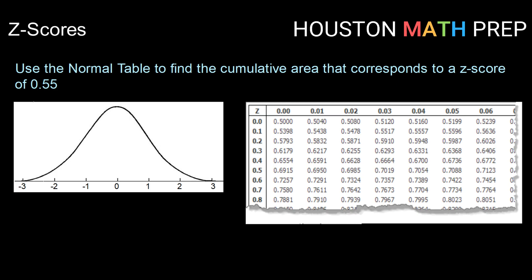So a z-score of 0.55 represents, if we're working with a standard normal distribution, which again is the normal distribution with mean of 0 and σ of 1, then that means we are at a place on the horizontal axis that represents 0.55. So that would be approximately here. And when we're talking about the cumulative area, that represents the area to the left of that value. So we are looking at this area.